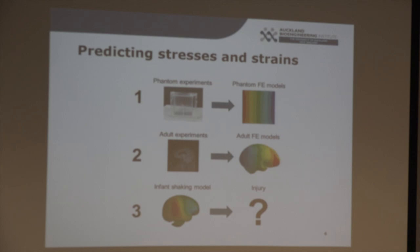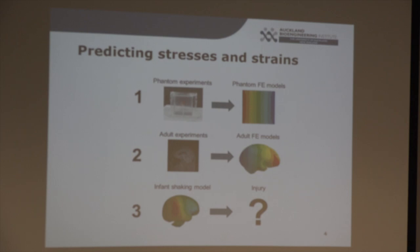The second part: we were quite fortunate to get some data from a group in America who had performed in vivo adult head rotation — adult brain deformations. We used that dataset to validate the techniques formulated in our phantom experiments in a more realistic adult setup. The third part was to use all of those computational techniques to set up an infant model, apply the shaking boundary conditions, and predict certain mechanical indices from that model.